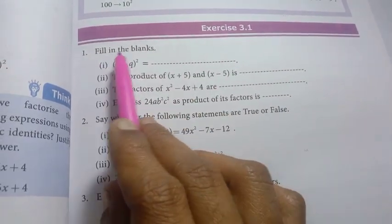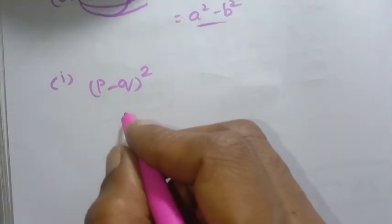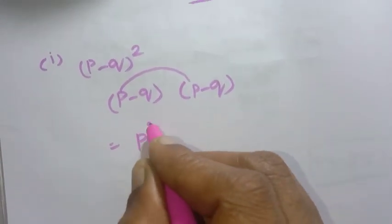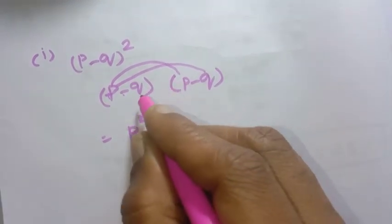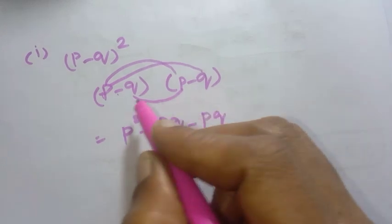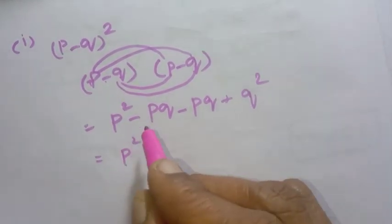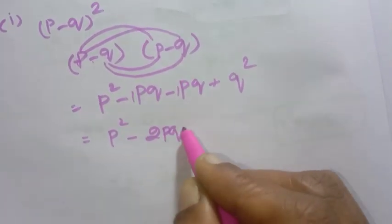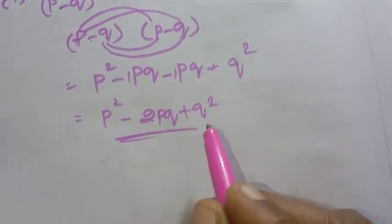Exercise 3.1, Fill in the Blanks. First one: p minus q the whole square. We apply the a minus b whole square formula. p minus q the whole square equals p into p, which is p squared, minus p into q giving pq, minus q into p giving pq, and minus q into minus q giving plus q squared. So the answer is p squared minus 2pq plus q squared.